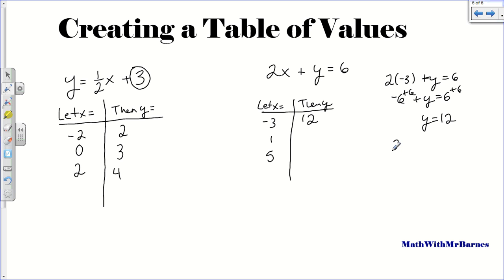And then I'll do the same thing again. So 2 times 1 plus y is equal to 6. So that's going to be 2. So I subtract 2 from both sides, subtract 2, subtract 2. So again, y is equal to 4. And then I do it again with 5, 2 times 5 plus y is equal to 6. So that's 10 plus y is equal to 6. So subtract 10, subtract 10, and that's going to be negative 4.